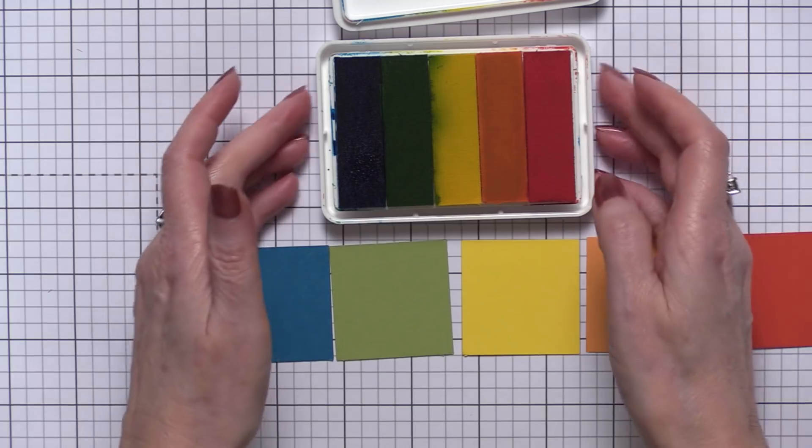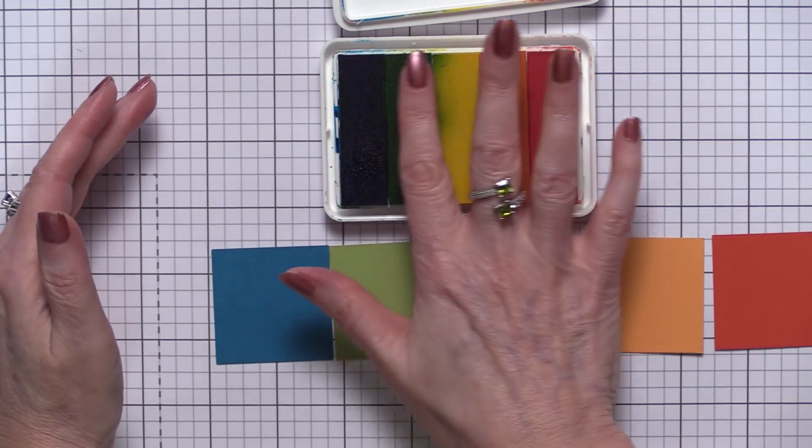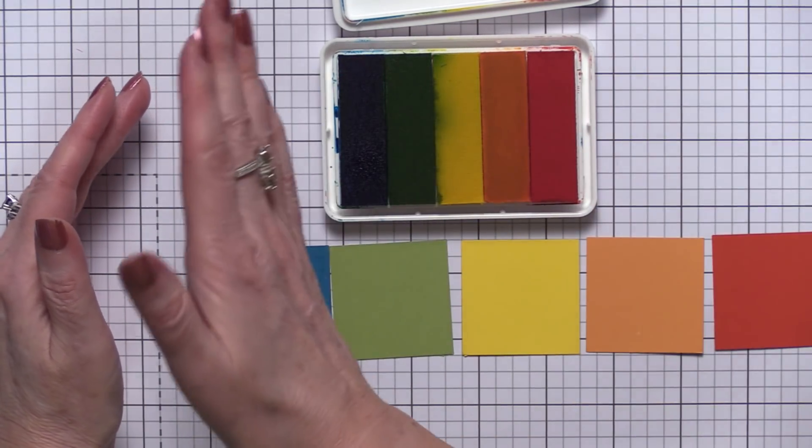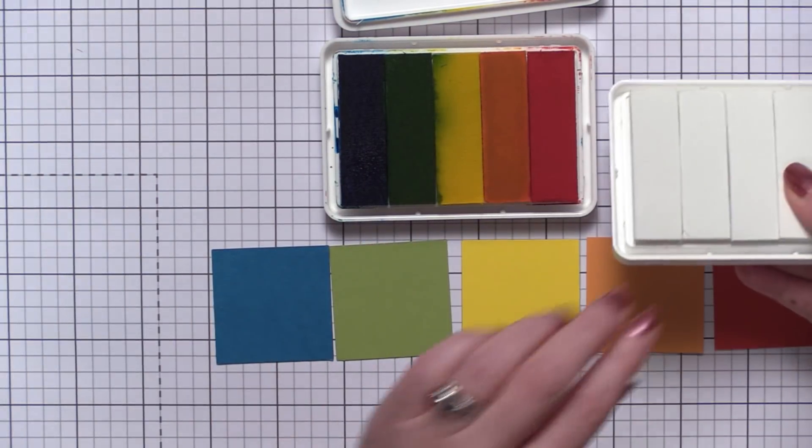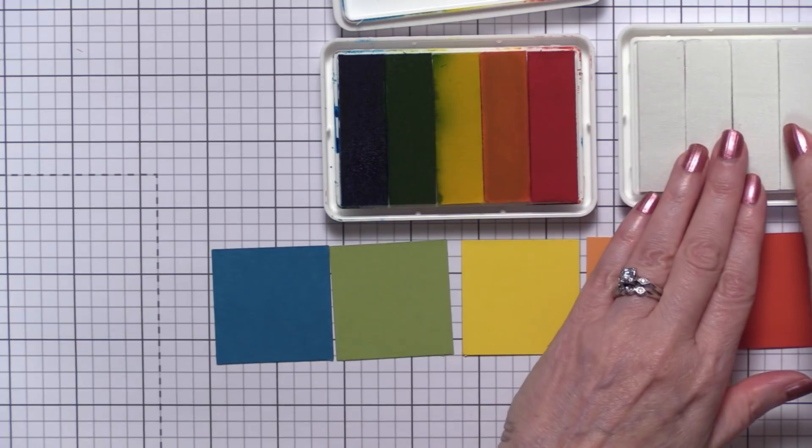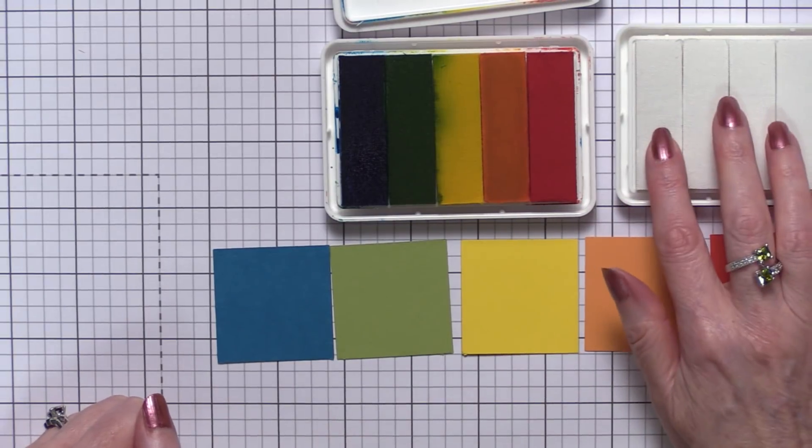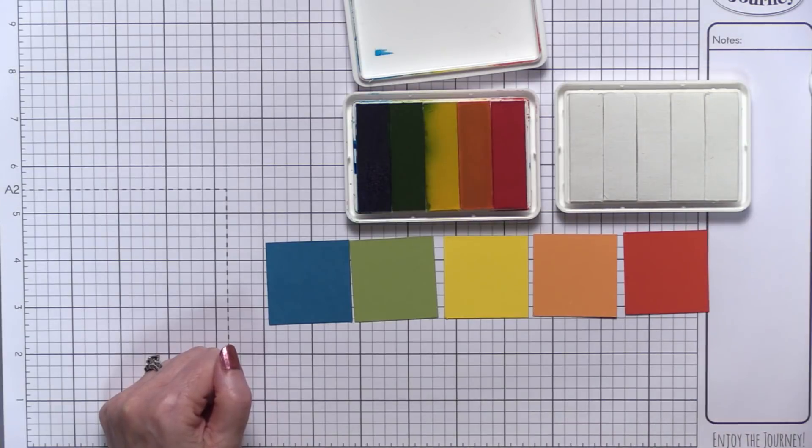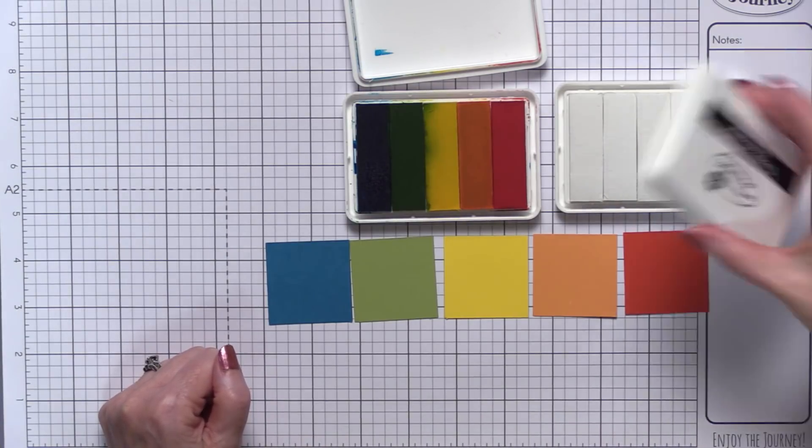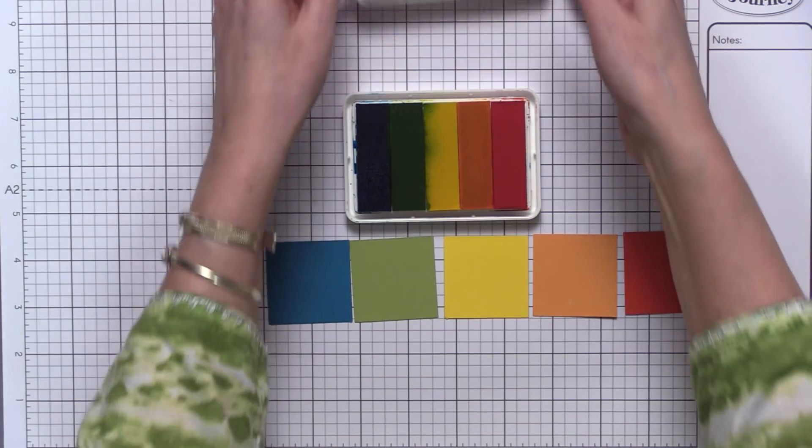Once you're finished inking all the color, you're going to do each one, then you're going to come back and do a second coat. Because when you're starting from a blank dry pad, you are going to use quite a bit more reinker than you would if you're just adding a little extra to an already juicy pad.